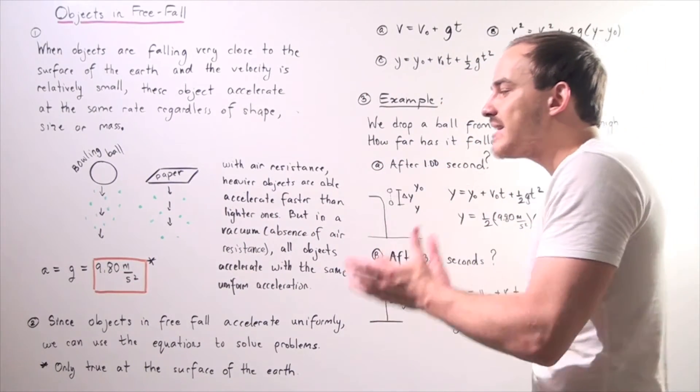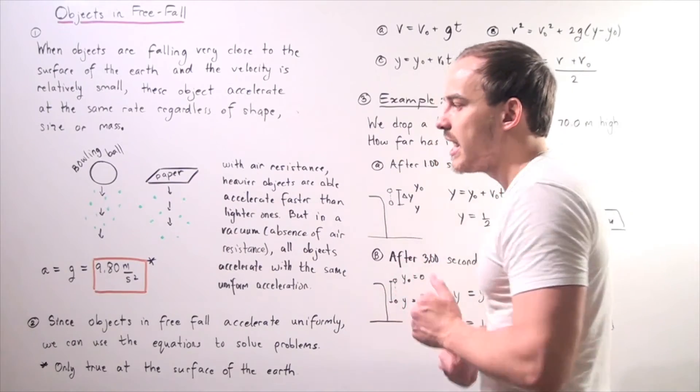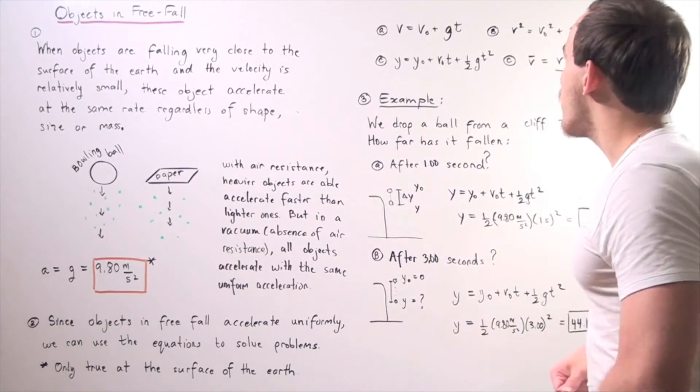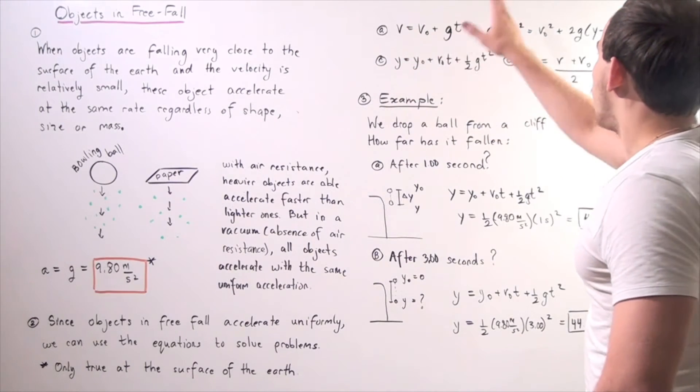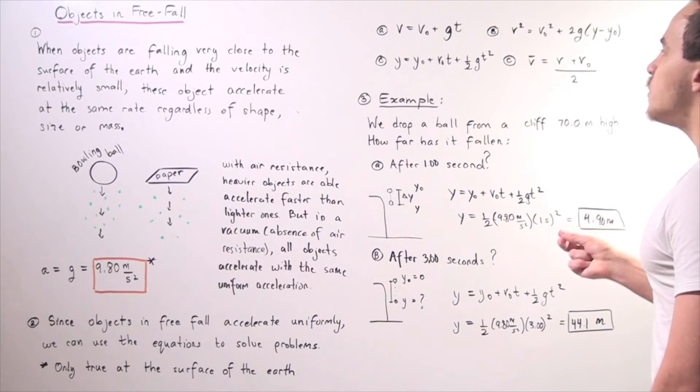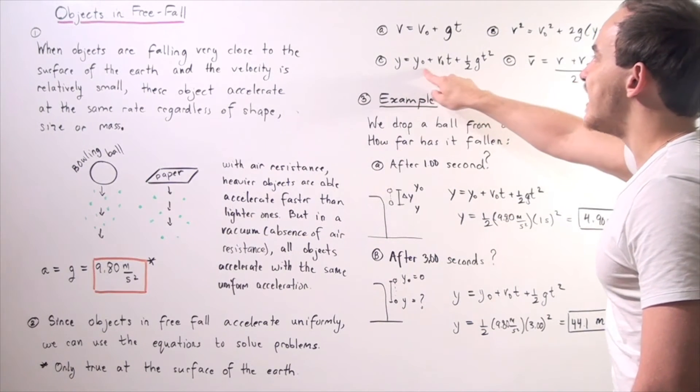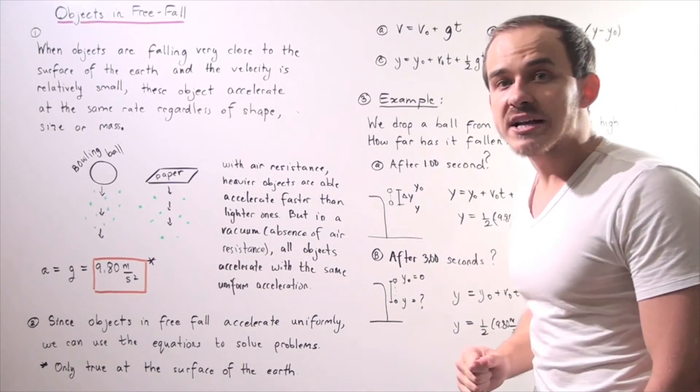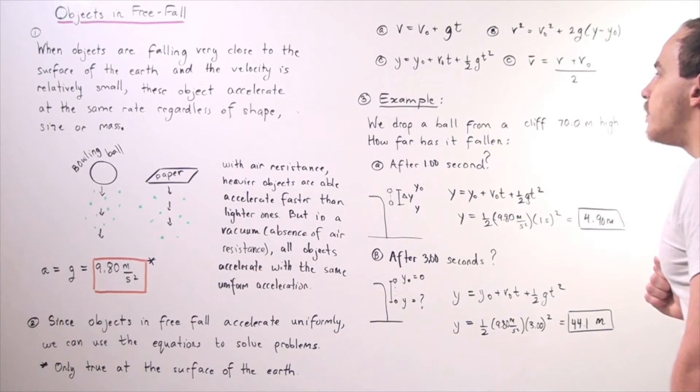So every second our velocity of the object increases by 9.8 meters per second. These are the four equations that we can use. Notice that we replace the a's with g's and we replace the x's and x nots with y's and y not because now we're working along the y direction. So let's do one example.